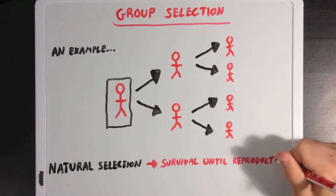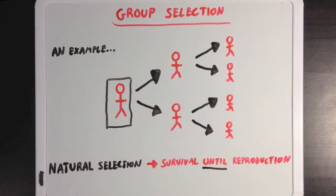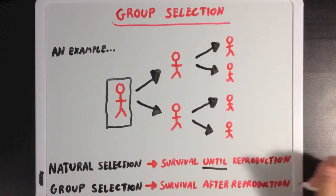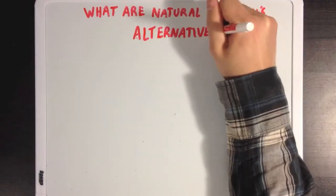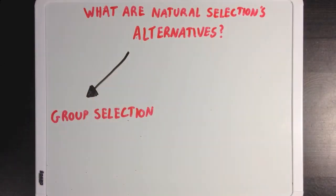So natural selection will typically look for traits that help with survival until the age where reproduction is possible. But group selection accounts for all of those other traits that might help with survival after reproduction is no longer possible. So we talked about the first alternative to natural selection, and this was group selection. But what about artificial selection?